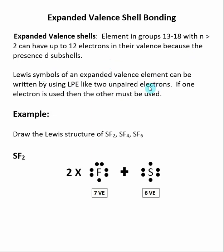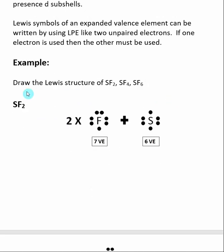When we draw the Lewis structure of an expanded valence element, we can use lone pair electrons as if they are two unpaired electrons. Previously, when converting Lewis symbols into Lewis structures, we only bonded with unpaired electrons and did not use lone pair electrons. In expanded valence shell bonding, lone pair electrons can be used in bonding — but if you use one of those electrons, you have to use the other one. SF2 is our first example; sulfur is in n equals 3 in the P block, so it has the ability to have expanded valence.